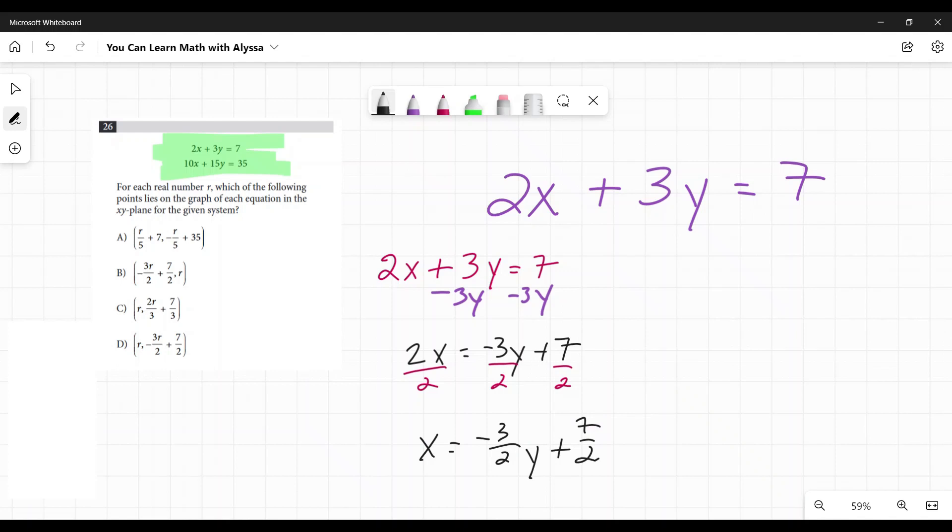Other side, I'm going to solve for y. So here I have 2x plus 3y equals 7. To solve for y, I'm going to subtract 2x from both sides. I have 3y equals negative 2x plus 7. And I'm going to divide everything by 3 to get rid of that 3 in front of the y. And I get y equals negative 2 thirds x plus 7 thirds. Now here's where it gets a little tricky and a little conceptual.